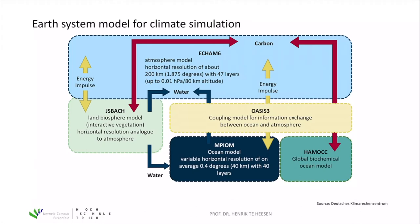This flowchart shows the Earth's system model for climate simulation — a simplified concept of how to couple the different parts of the system. In blue is the atmospheric model with a horizontal resolution of about 200 kilometers and 47 layers describing all atmospheric effects. The arrows represent the exchange of components or energy, including an exchange with the land biosphere model, which is an interactive vegetation model with horizontal resolution analogous to the atmosphere. There is also an exchange of water vapor between the biosphere model and the water model.